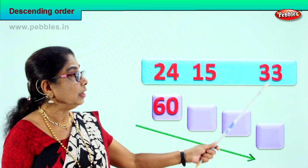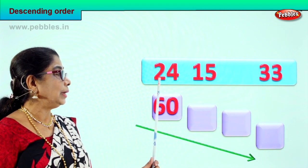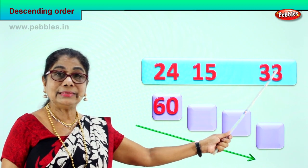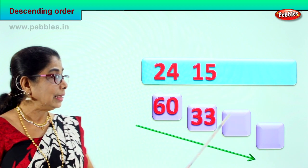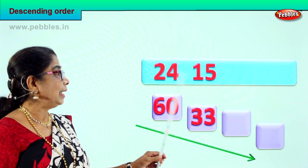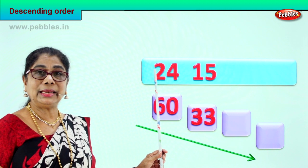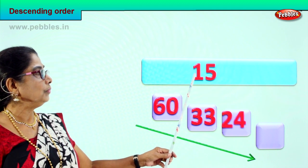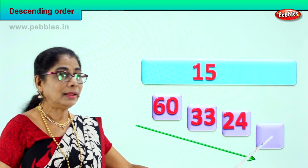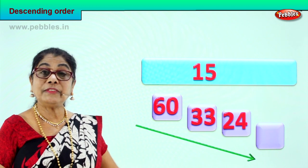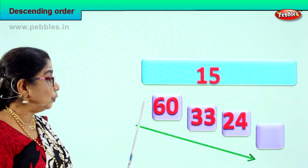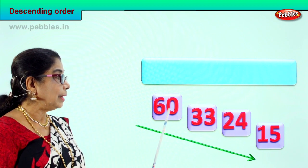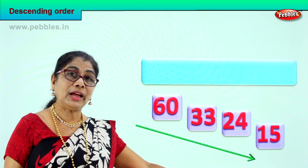After that, we have three tens, one ten, two tens. So what may be the next number? Certainly three tens — thirty-three, three ones, comes next. Then we have one ten and two tens. Certainly two tens — twenty-four, four ones, comes next. And finally we have one ten, fifteen, five ones. Right down it goes. We have arranged all four numbers in descending order.